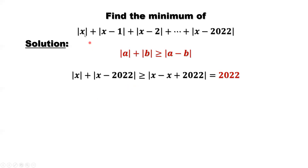Let's do it one by one. First one and the last one — use this formula. A equals x, B equals x minus 2022. The right-hand side is A minus B, which is x minus (x minus 2022). The x and negative x cancel, leaving 2022.